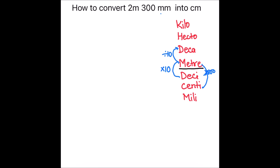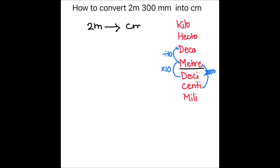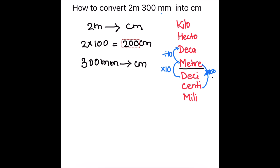Now let's convert 2 meters 300 millimeters into centimeters. First, we convert 2 meters into centimeters. To convert from meters to centimeters we multiply by 100, so 2 times 100 equals 200 centimeters. So 2 meters is 200 centimeters.